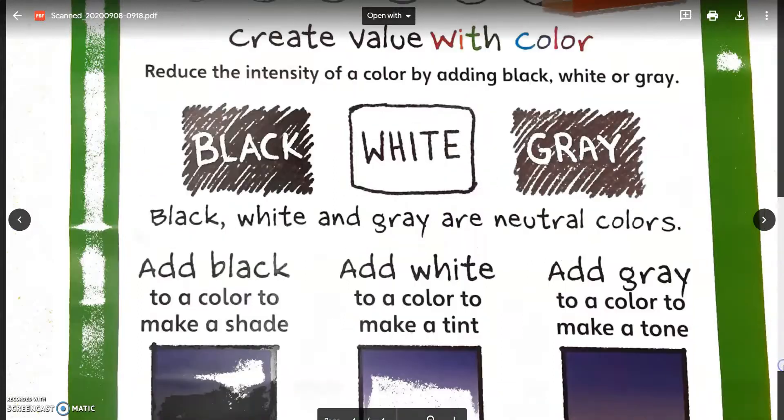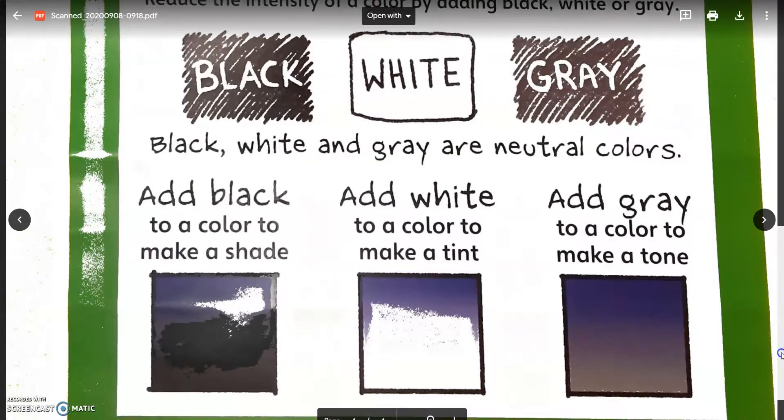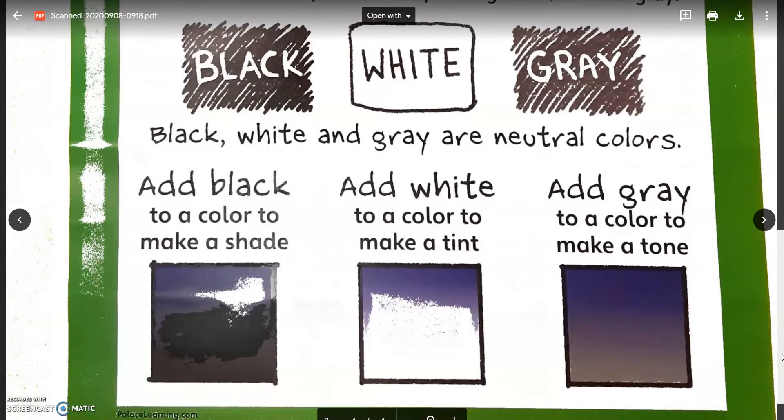If you add black to a color, you are making a shade or shading the color. If you add white to a color, you are tinting the color or making a tint. If you add gray to a color, you are toning the color or making a tone.